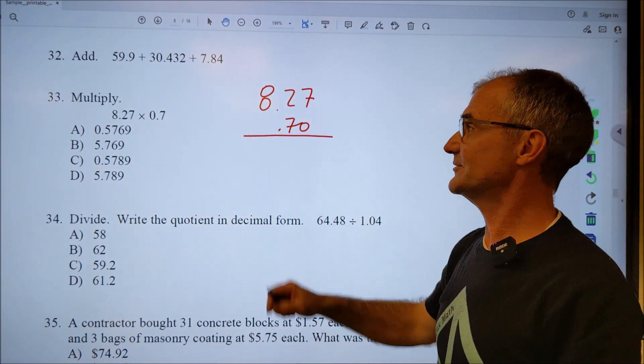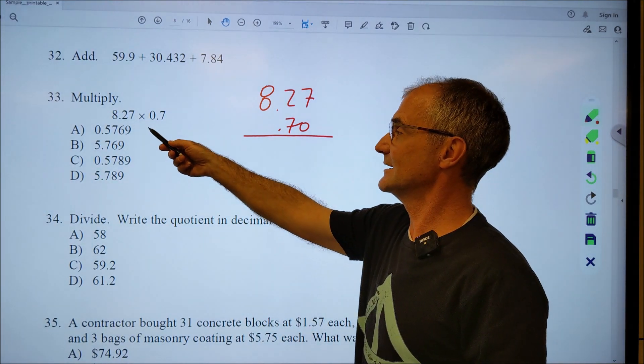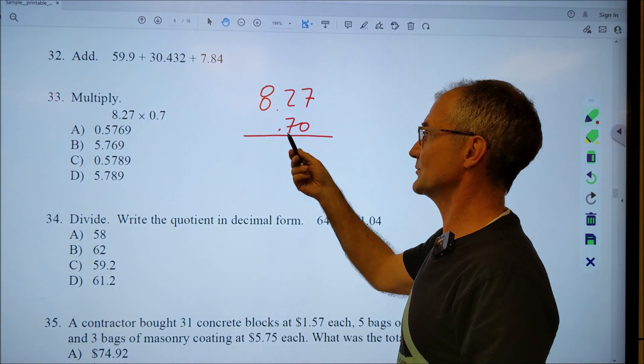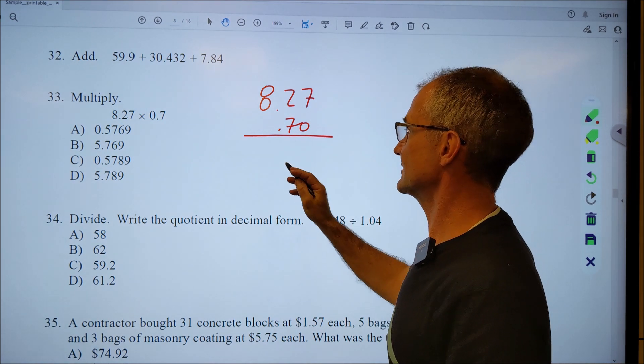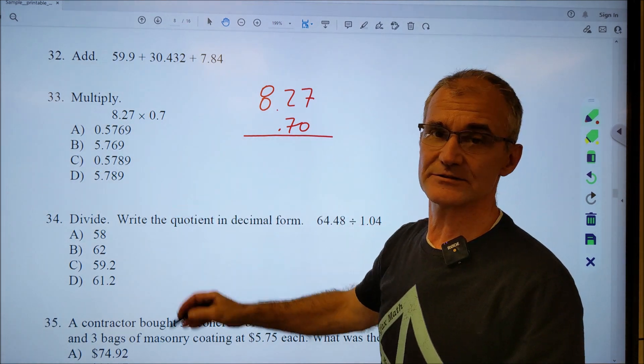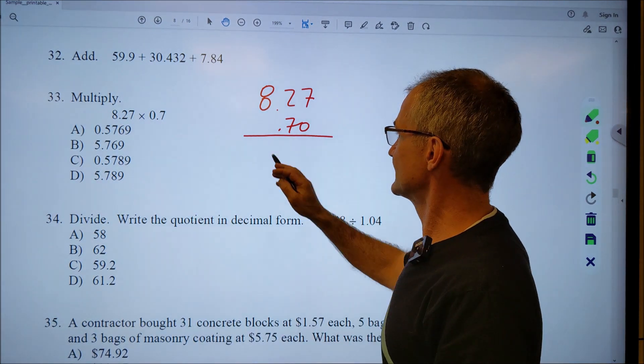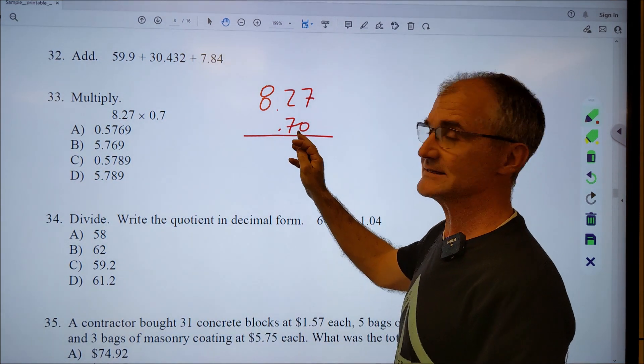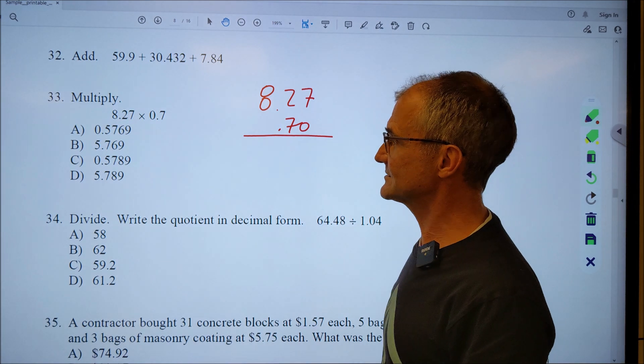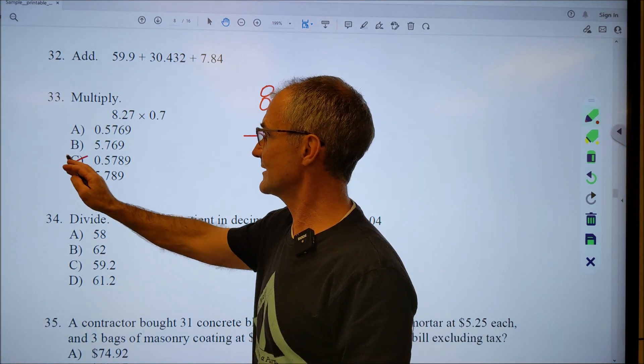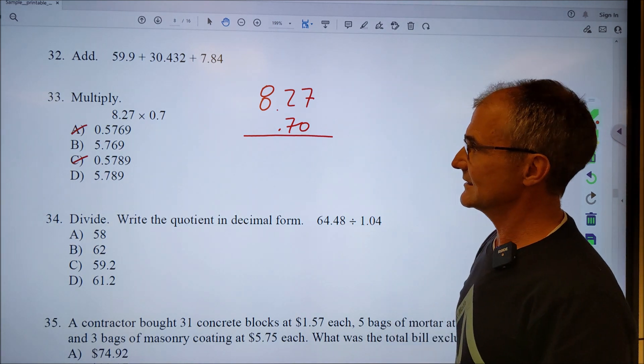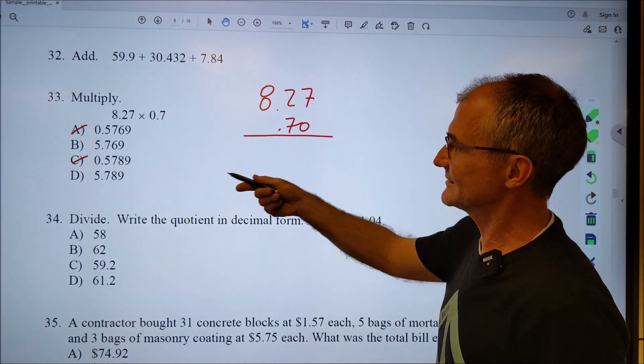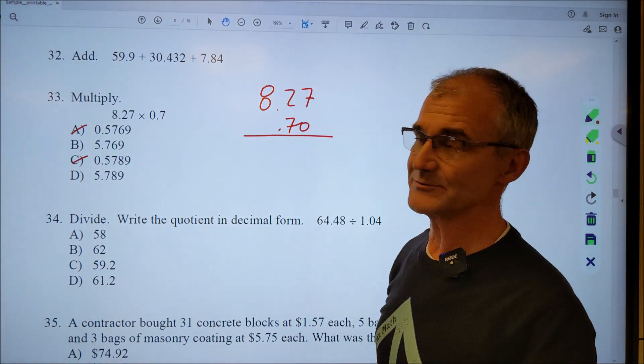Okay, getting started on number 33 here. I'm just going to rewrite that. Eight point two seven times point seven. That's the same thing as point seven zero. Before I even start, I'm just going to see if I could just do it without having to multiply it out. So I have eight, approximately eight, times about three quarters, about five or six. So it clearly can't be that one or that one. So I have to pick between B and D. I can't really do anything quickly to see which one it is. So I am going to multiply it out.